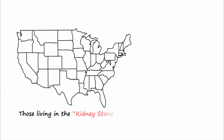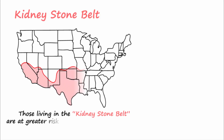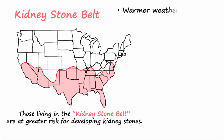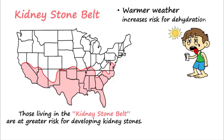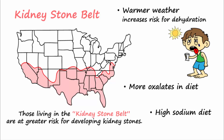Those living in the kidney stone belt are at greater risk. This is thought to be due to the warmer weather, which brings on increased risk for dehydration. Furthermore, the southern diet on average has more oxalates than sodium. For example, sweet tea is consumed often and is high in both oxalates and sodium.